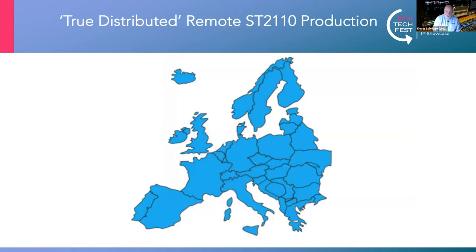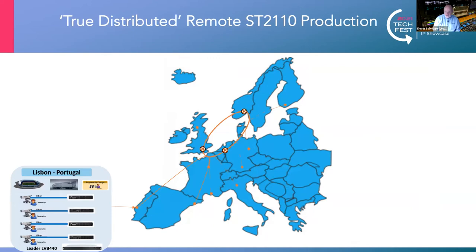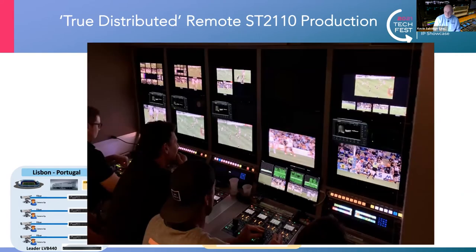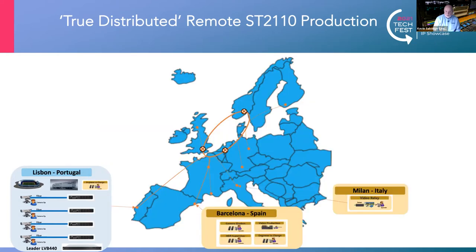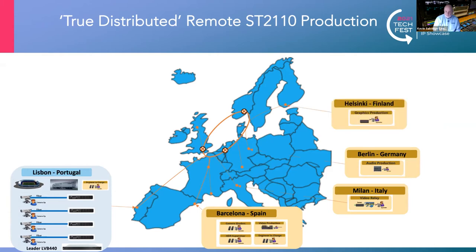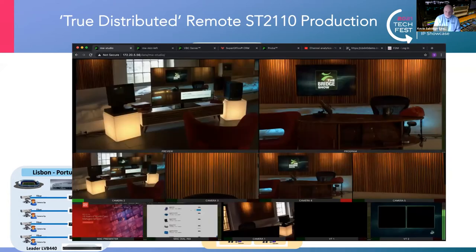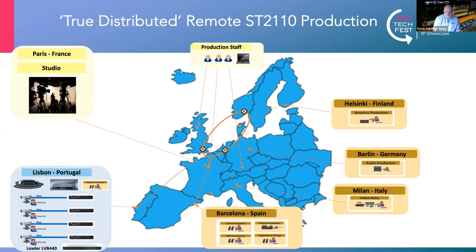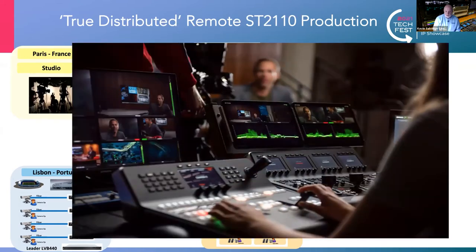If we put all this together and look at the network connectivity that now exists across Europe, there's nothing to stop us doing the following. Let's take a sports production in Lisbon. Let's put the camera shaders in Barcelona, having them racking the cameras remotely on the other side of the Iberian Peninsula. The video replay can be connected by the network, audio production can be connected by the network, graphics can be connected. And production staff can now work remotely and, with the multi-viewer display, view the sources relevant to their particular production requirements.